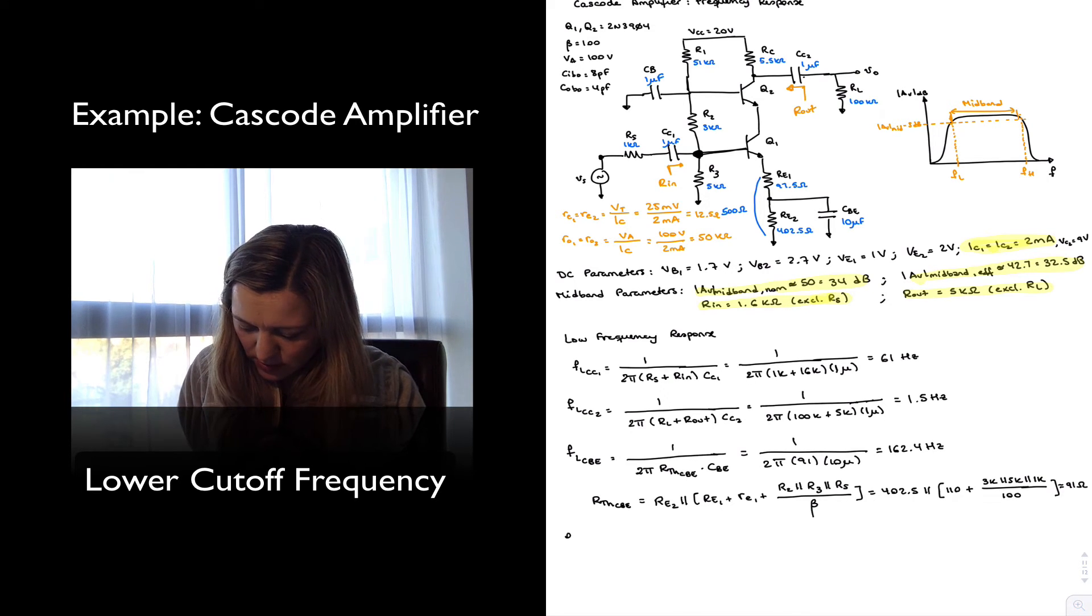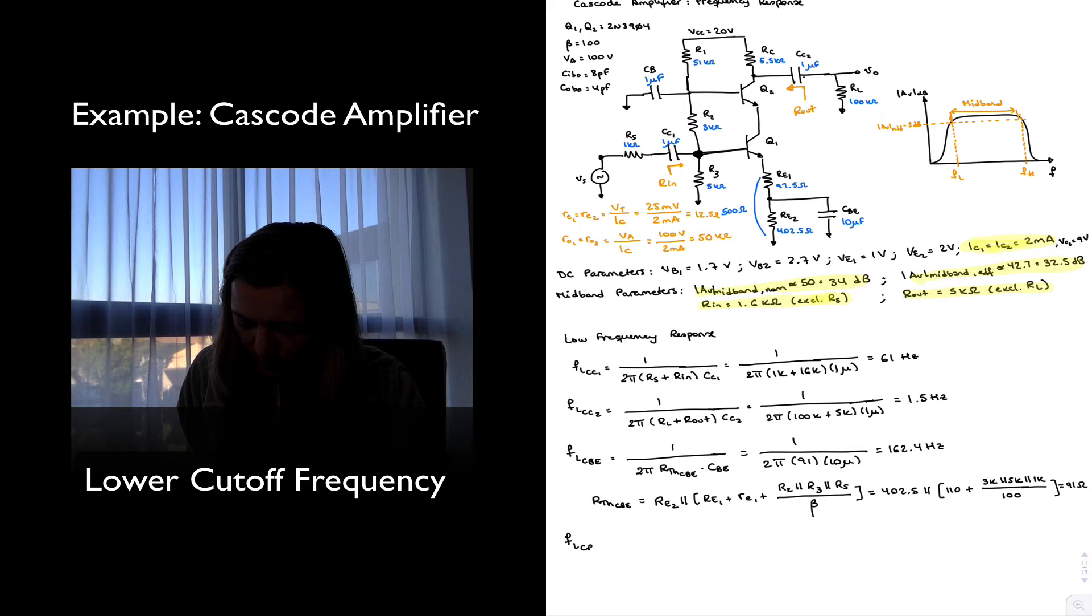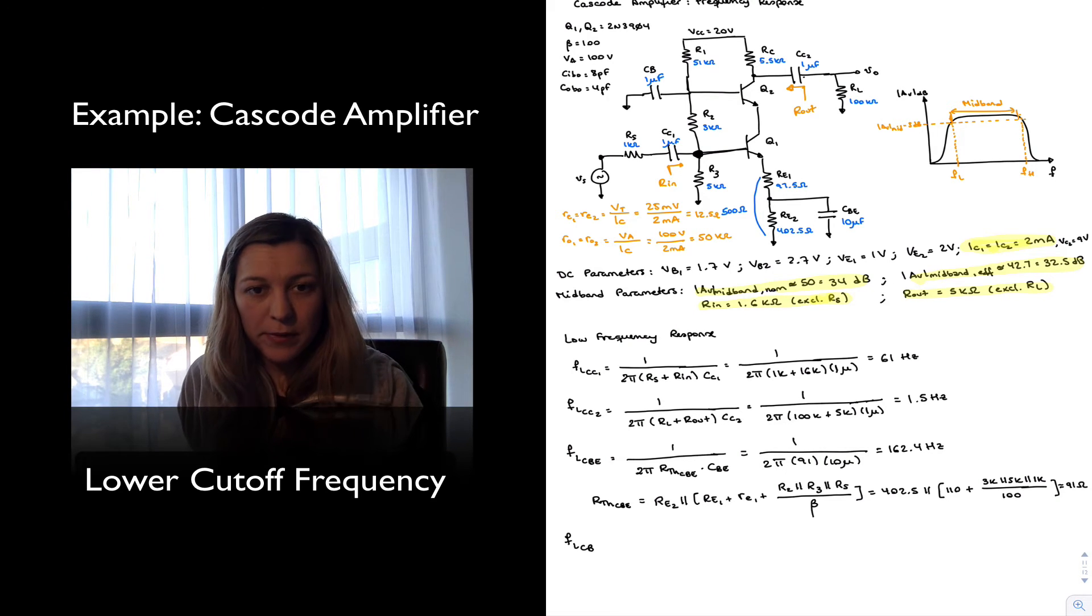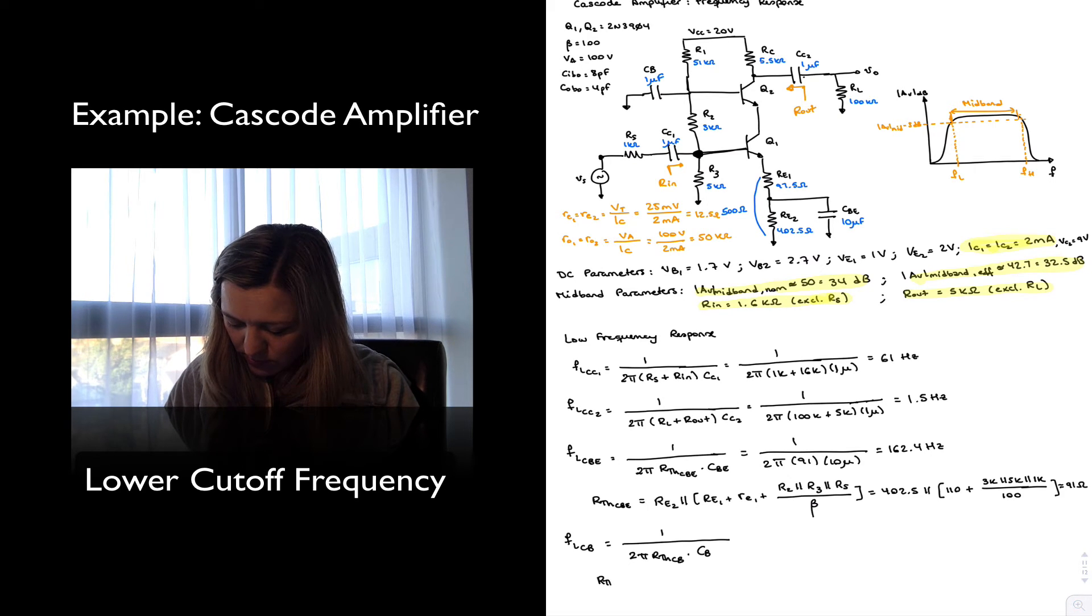And finally, I'm going to calculate the low cutoff frequency due to the base bypass capacitance, CB. And similar approach, 1 over 2π, Thevenin resistance connected to CB, times CB. And the Thevenin resistance, you can just go ahead and take a look at it.